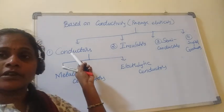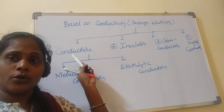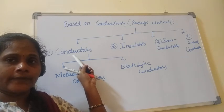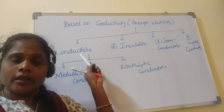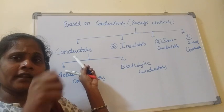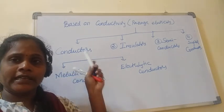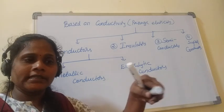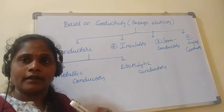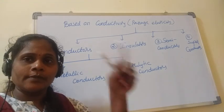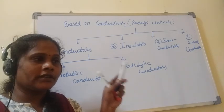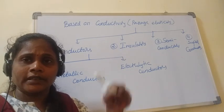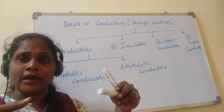Conductors are substances which allow the passage of electricity through them. For example, a metal rod — if you heat it from one end, you feel the heat at the edge where you are holding it; that is conduction of heat. And if you place that metal rod in an electric circuit, you get a shock — meaning electricity passes through it.